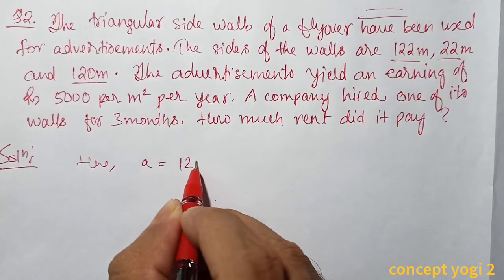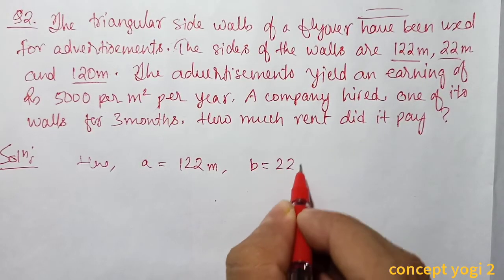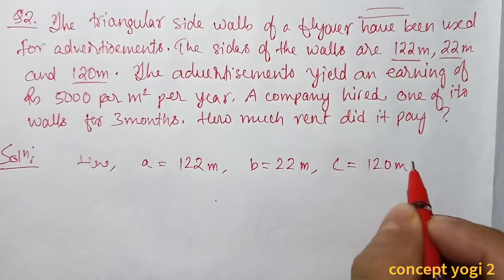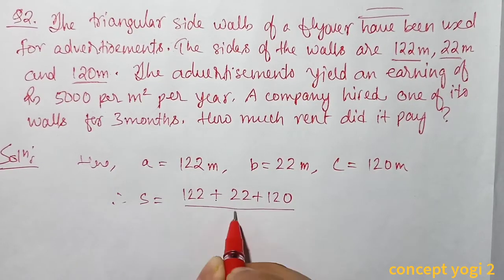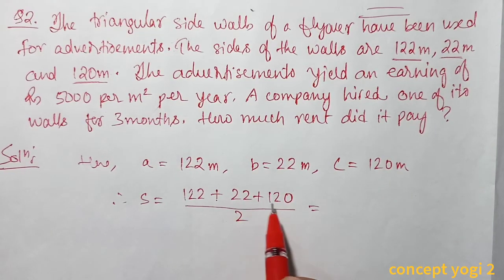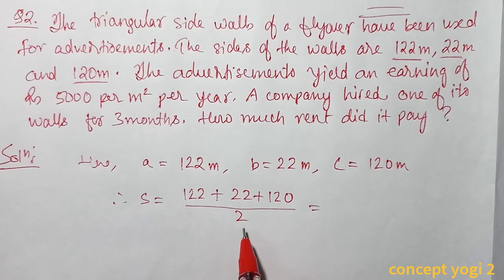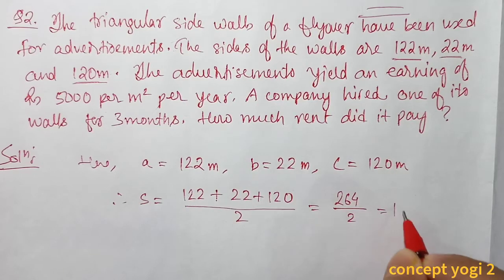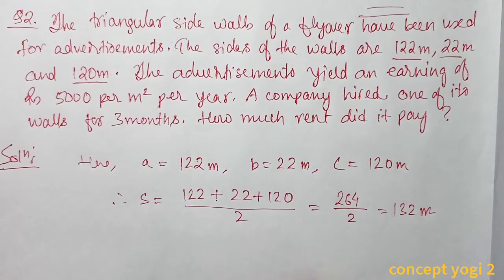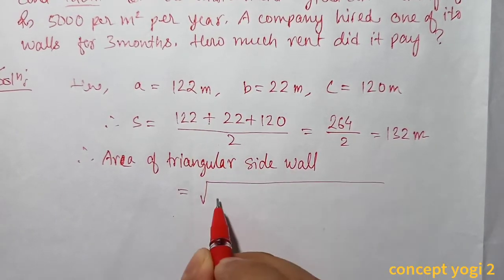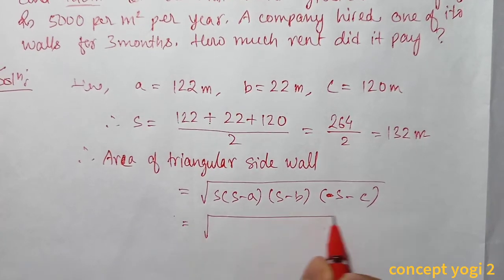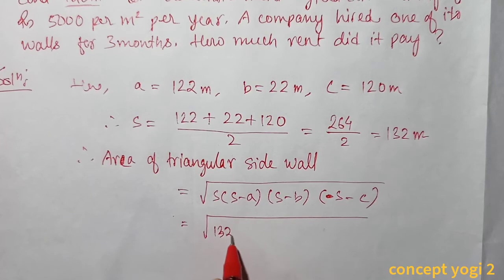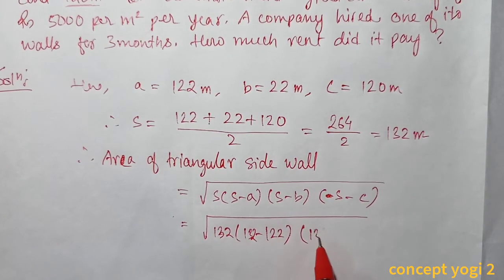Semi-perimeter s = (122 + 22 + 120) / 2 = 264 / 2 = 132 m. Therefore, area of the triangular side wall = √(s · (s−a) · (s−b) · (s−c)). Substituting: √(132 · (132−122) · (132−22) · (132−120)).